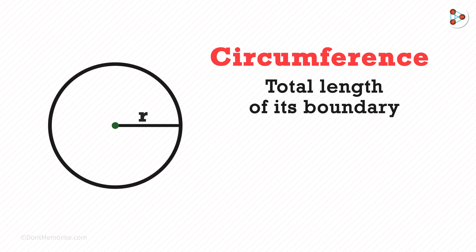How is this measured? Well, the formula of circumference is 2 pi r. r is the radius of the circle and this symbol here represents pi.